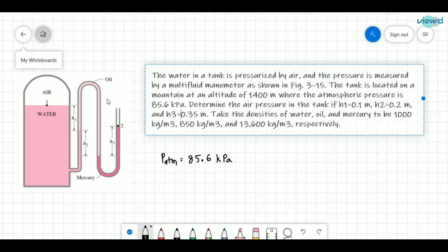If H1 is 0.1 meter, 0.1 meter, and H2 is 0.2 meter and H3 is 0.35 meter. So all the heights are given.